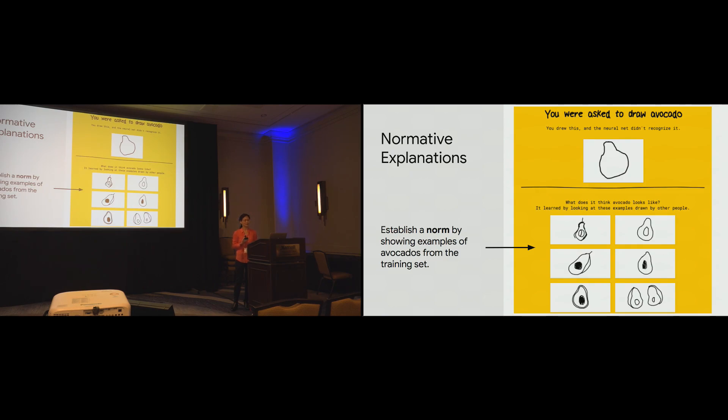So, normative explanations, rather than comparing anything, instead draw a random subset of avocados from the training set. So, for instance, given the set of avocados from the training set, a user might then realize, oh, maybe my avocado is missing a pit.